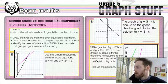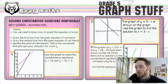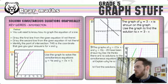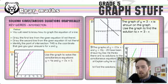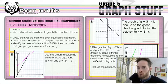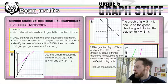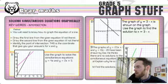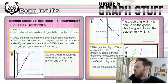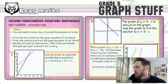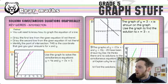The method states you will need to know how to graph the equation of a line. If it's not already done for you, you definitely need to know how to do it. There are videos on that prior to this one which you can watch. Draw the first line from the given equation if it's not there, draw the second line from the given equation if it's not there, and identify the point of intersection. This is the coordinate that you give for your answer of x and y.